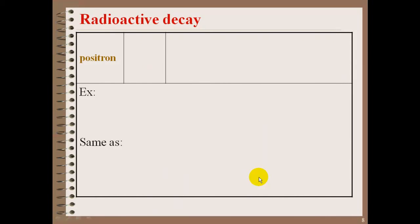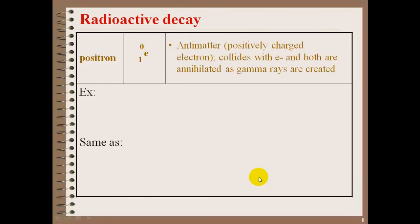A positron, very interesting particle here. A positron is actually a positive electron. This is considered antimatter, because it's a positively charged electron. What ends up happening with a positron is when it's given off, it will usually collide with an electron in the electron cloud and they're annihilated, and a gamma ray will be produced. Here's an example of a positron decay. Carbon-11 goes through positron decay to get boron-11.